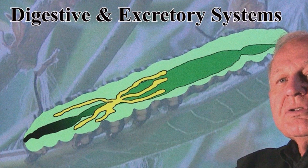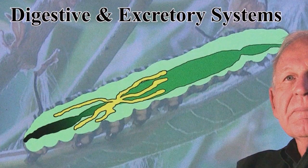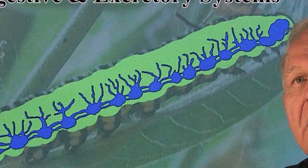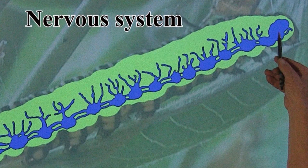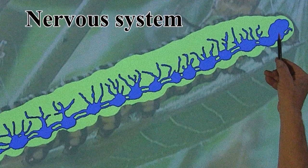Those two systems are important for the metabolism of the caterpillar. This is the nervous system of the caterpillar, represented by blue. The nervous system begins, you might say, at the brain — this is the upper end of the nervous system, really just a large aggregation of neurons.